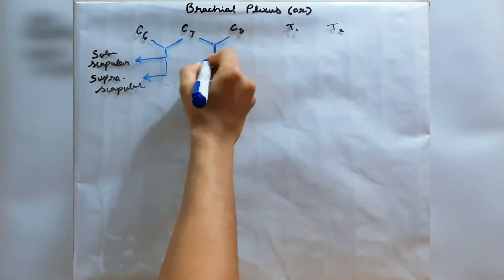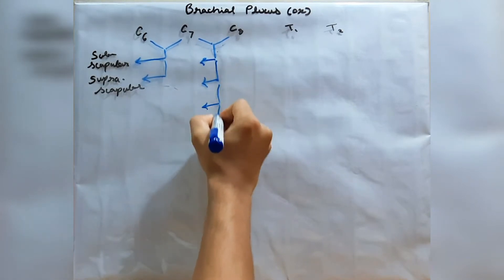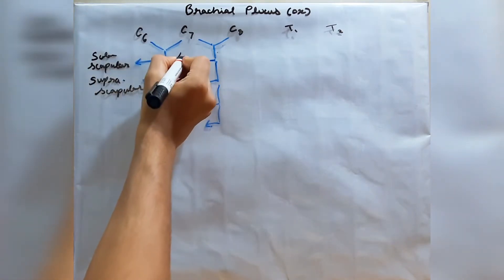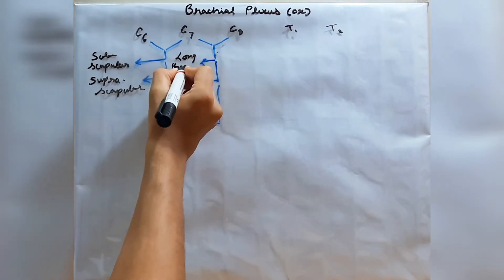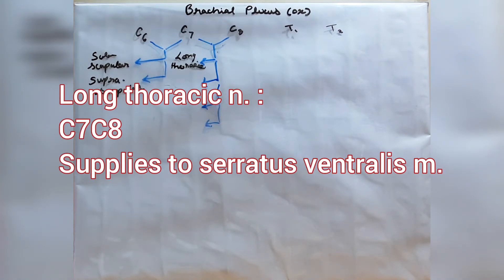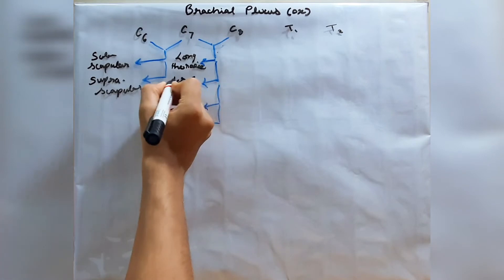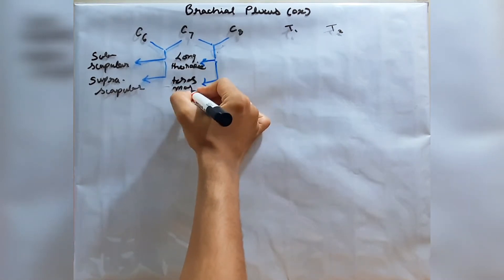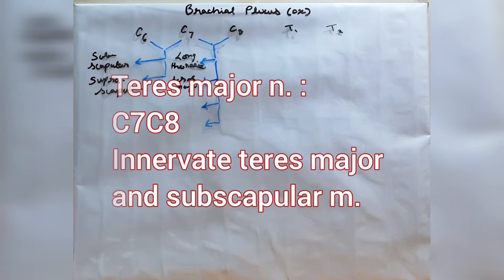Now C7 and C8 give rise to four nerves. The first is the long thoracic nerve, which supplies the serratus ventralis muscle. The serratus ventralis has two parts: serratus cervicis and serratus thoracis. The next nerve is the teres major nerve, also called the nerve to teres major, which supplies the teres major muscle and subscapular muscle.